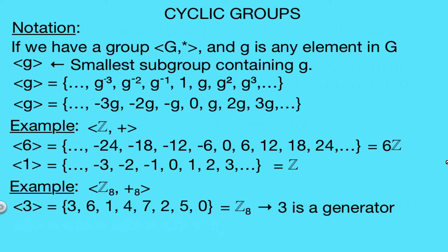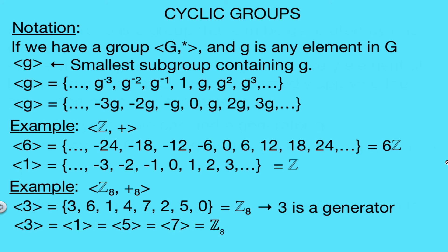Notice that 3 is not the only generator — 1, 5, and 7 are also generators for this group. There is a reason why these elements are generators versus 0, 2, 4, and 6: the generators are the elements that are relatively prime to 8. We'll see why that's true in upcoming videos, but for now this should help you understand what a cyclic group and a generator are.